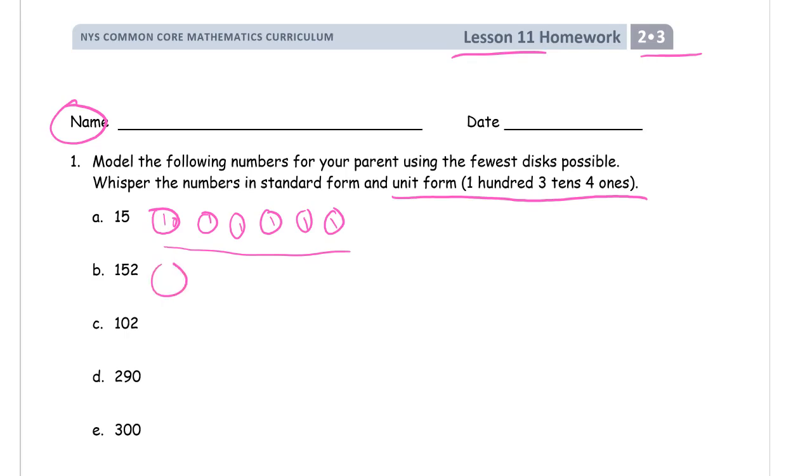And 152. You're going to notice that this is going to end up being a unit form. We need 1 hundred, 5 tens. 1, 2, 3, 4, 5 tens. And then we'll need 2 ones.